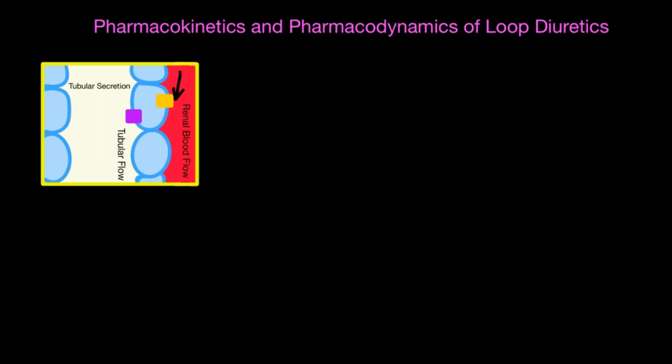Loop diuretics have a good amount of protein binding, so they're not filtered at the glomerulus — they're actively secreted into the tubular lumen. Three things are needed: renal blood flow to deliver the drug to the kidney, active tubular secretion via organic acid transporters on the basolateral side of the proximal tubule, and adequate tubular flow so the drug can reach its site of action at the ascending loop of Henle.